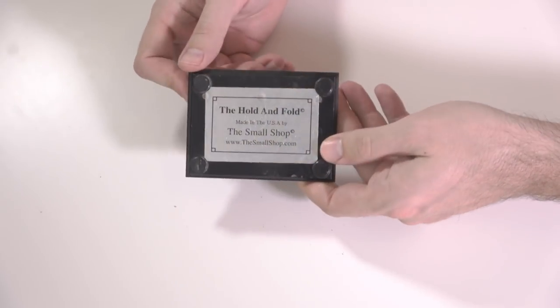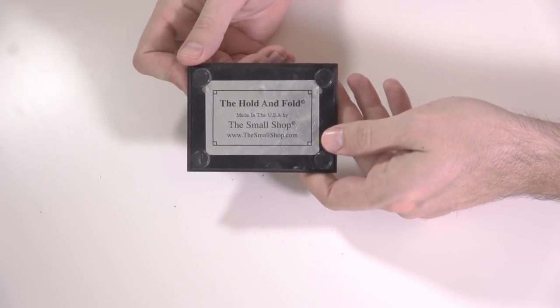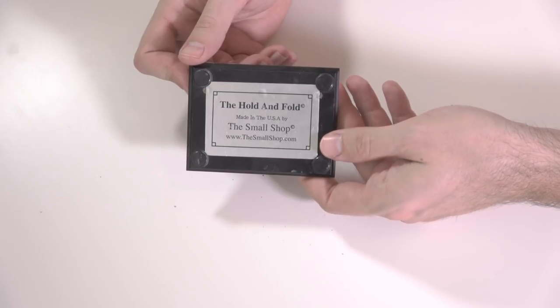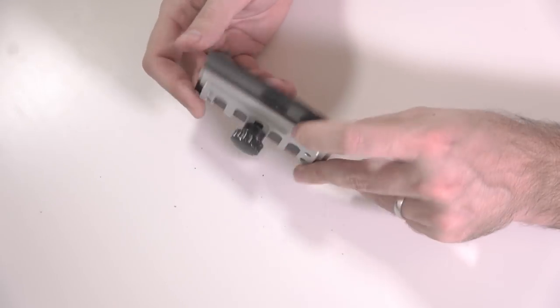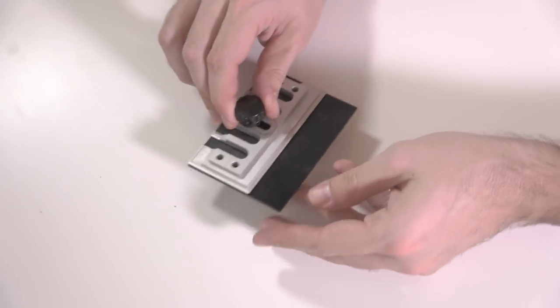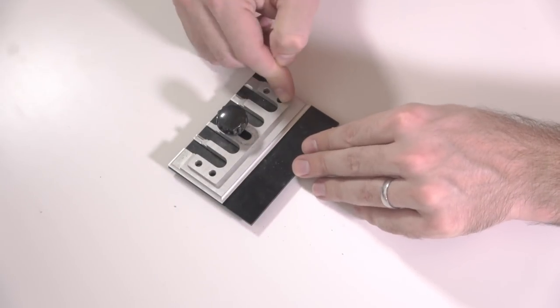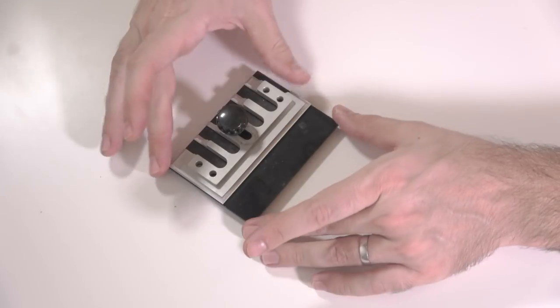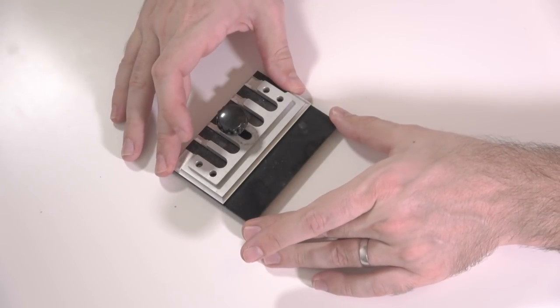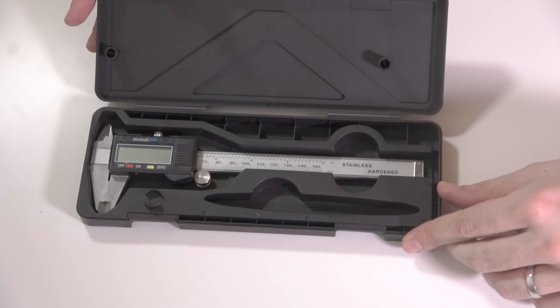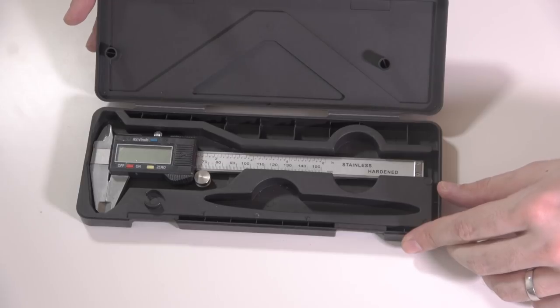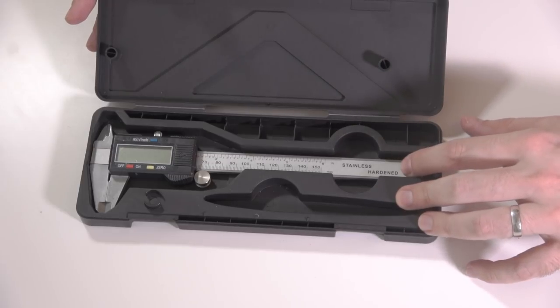There are other alternatives available, but this is the one I use. Made in the USA by The Small Shop, and you can probably see the web address on there as well if you want to have a look. This is something I use from time to time. If you've got intricate bits of photo etch that need to be bent up, this is a very useful tool for that particular job.